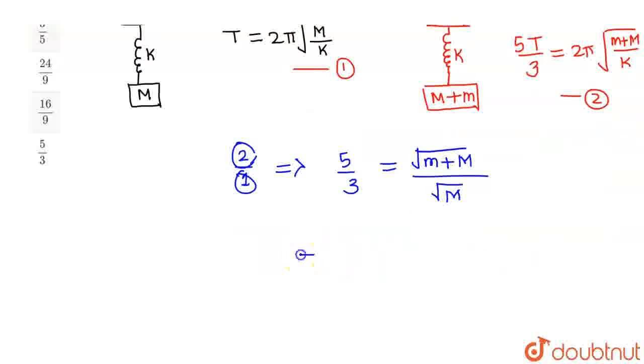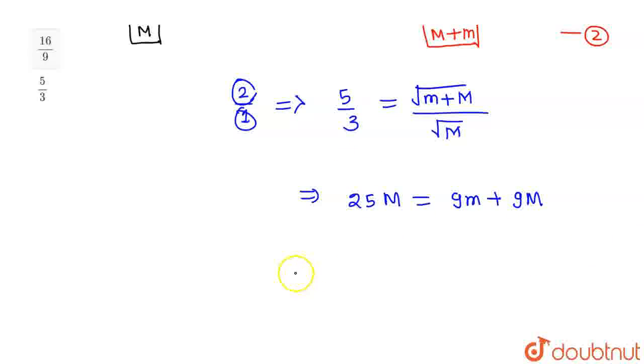Now, if I square both sides and cross multiply after squaring, I will be getting 25M equals 9 times small m plus 9 times capital M. So from here, this is 25M minus 9M which is nothing but 16. So this is 16M equals 9m.